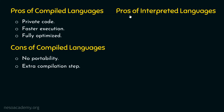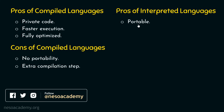The first advantage of interpreted languages is that they are portable. Interpreted languages are portable because every time we are providing source code, not an executable. Your friend must have an interpreter installed on their machine to run that code. Source code can run on any machine which has an interpreter installed, hence interpreted languages are portable.